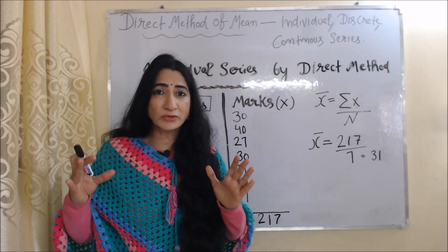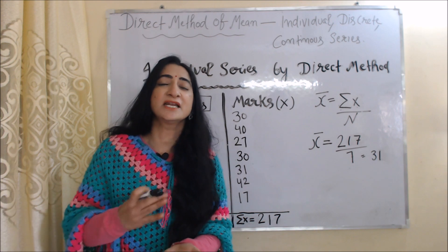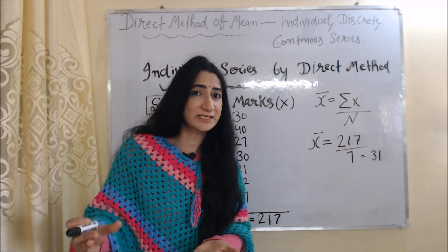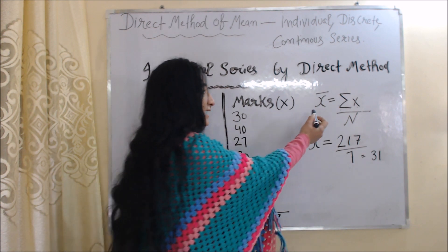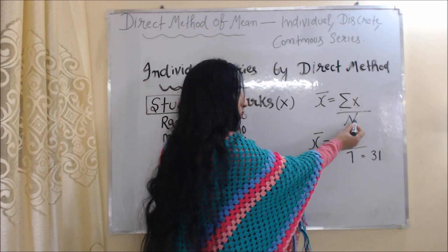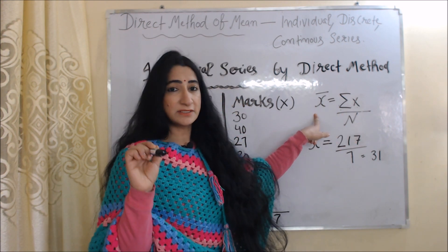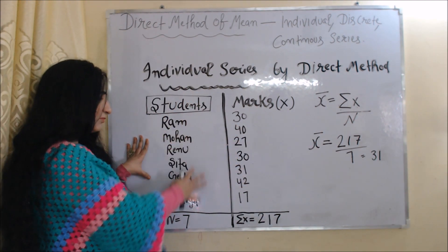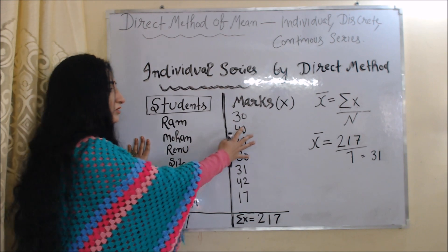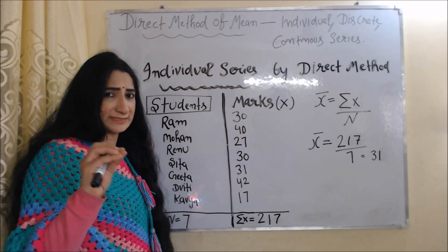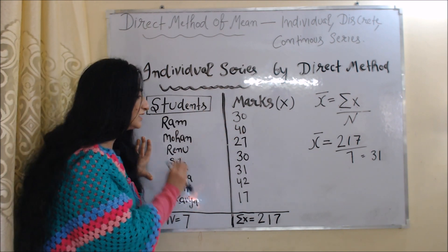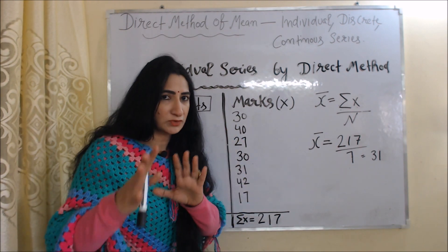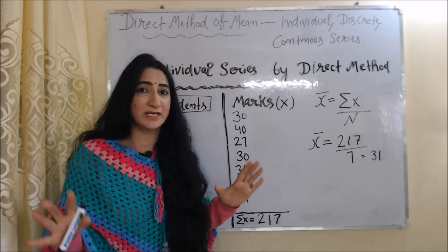Firstly, we are going to talk about how to calculate mean by direct method in individual series. The formula is x̄ = Σx / n. Here, x̄ represents our mean. In the first column, names of students are given. In the second column, marks obtained by all students are given. But how can we identify this is individual series? Because it represents individual marks of each student — frequencies are not given here.